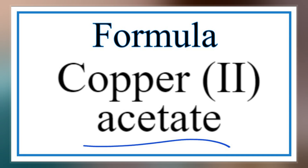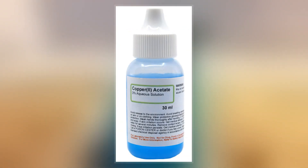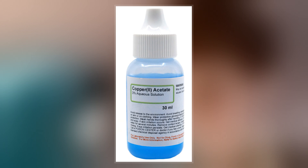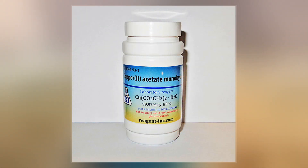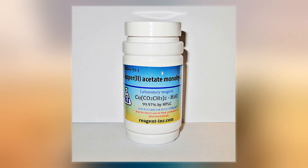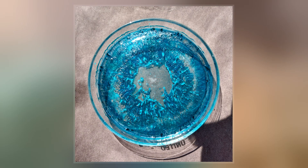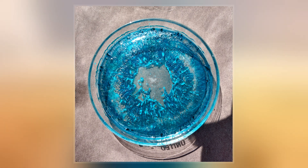Anhydrous Cu₂(OAc)₂ is a dark green crystalline solid, whereas Cu₂(OAc)₂·2H₂O is more bluish green. Since ancient times, copper acetates of some form have been used as fungicides and green pigments. Today, copper acetates are used as reagents for the synthesis of various inorganic and organic compounds.